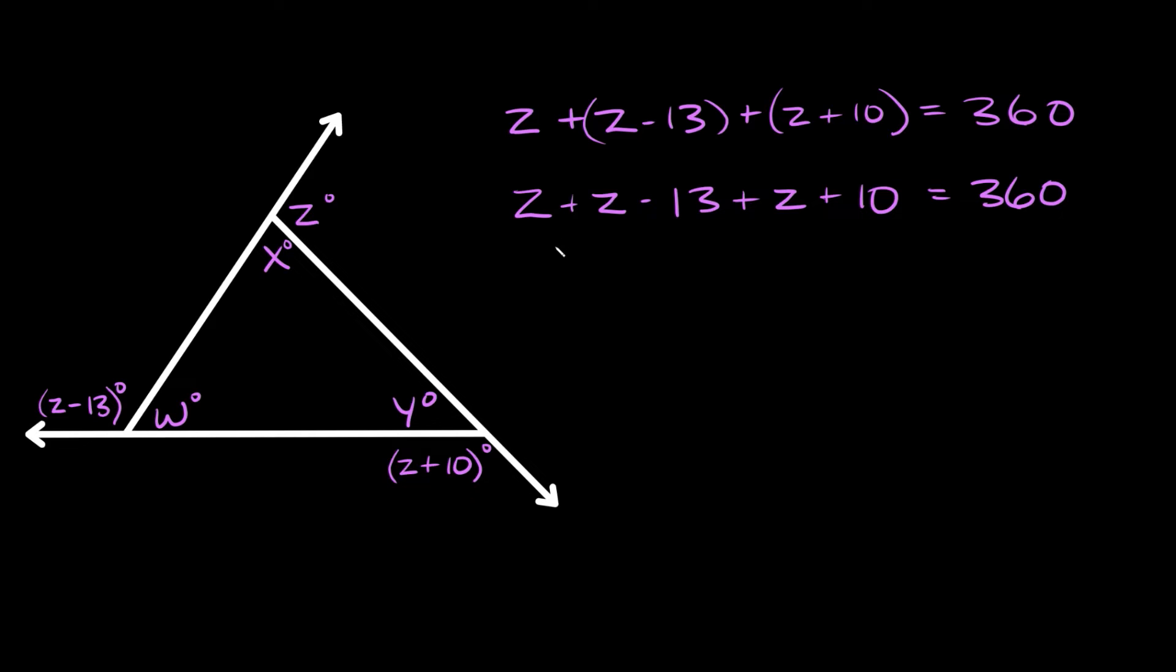Now we can start combining like terms. So here we have z plus z plus z, so three z's is equal to three z. And then here we have minus 13 plus 10, so negative 13 plus 10 is equal to negative three. So minus three. And again that's equal to 360.